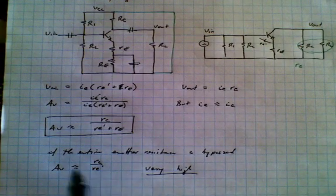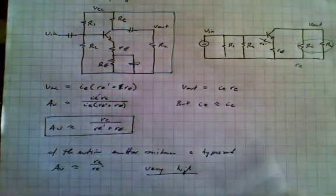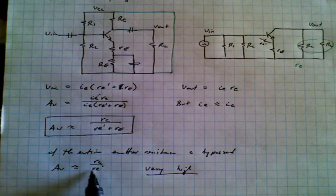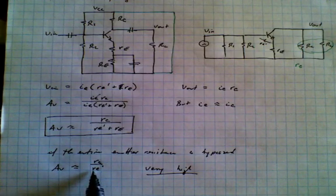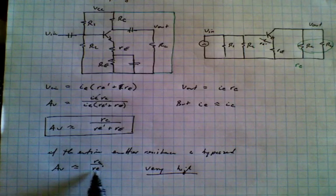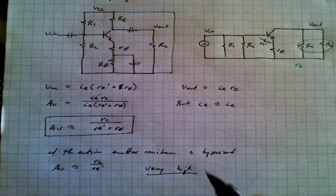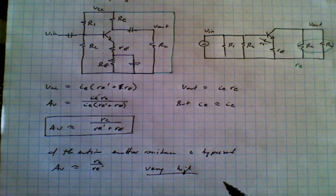Now the reason why we typically don't bypass the entire thing is that this gain is almost uncontrollable. It's very difficult to control, in particular because it depends upon the emitter current. And so it's not very good.